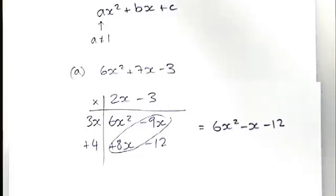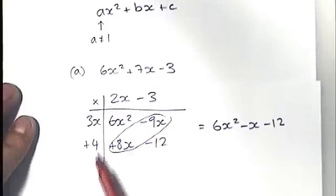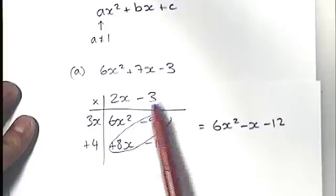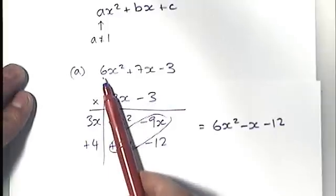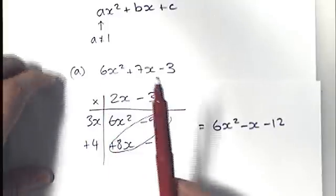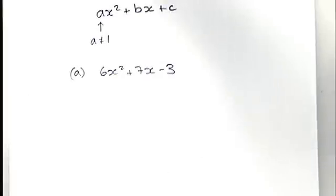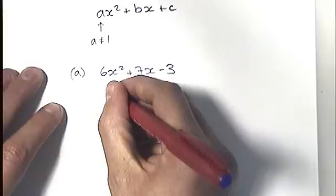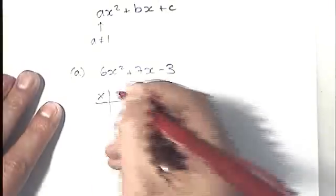Now that's obviously not the correct factorisation. I haven't used the right brackets here to give me my answer. But what we're going to do is use a reverse grid method to try and figure out what numbers should be in the brackets.